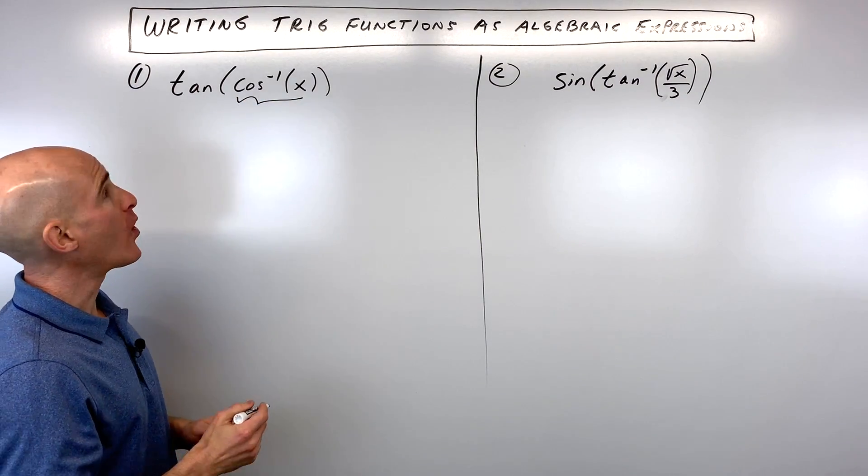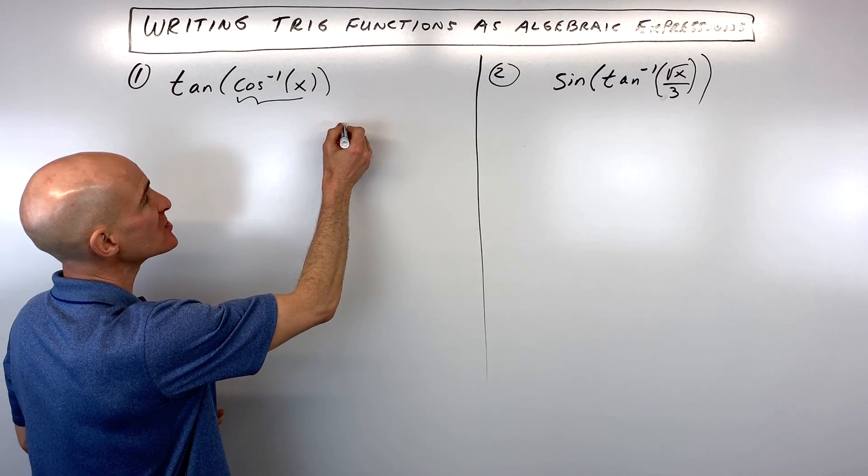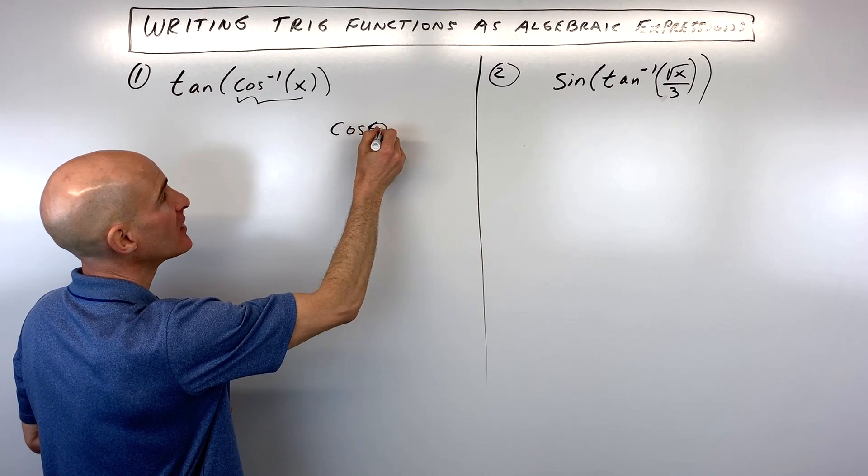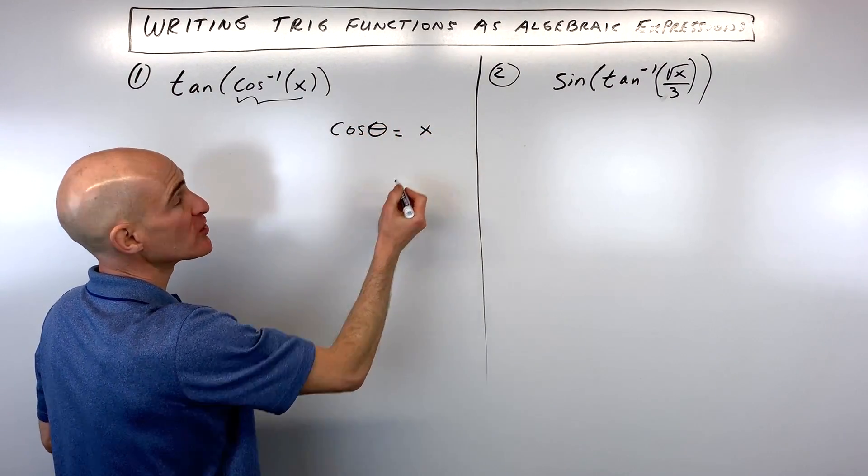When you look at this inner quantity here, cosine inverse of x, this is just another way of saying cosine of what angle equals x.